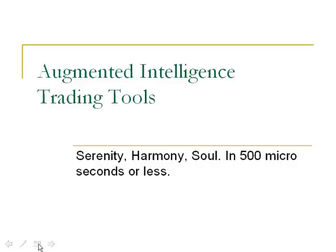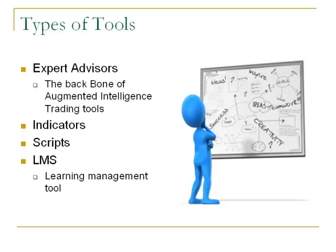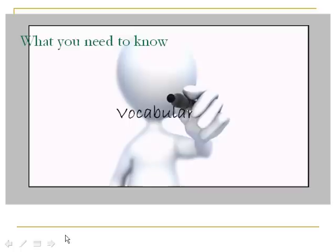Augmented intelligence trading tools — serenity, harmony, soul — executing in 500 microseconds or less. These tools are designed to take away the mundane aspects of trading, such as moving your stops, taking profit at certain points, and alerting you to problems. Expert advisors are the main backbone of the augmented trading tools. They're not black boxes; they're called CAT tools — computer assisted trading tools — or FAT tools — forex assisted trading tools. They include indicator scripts and an LMS, a learning management system.